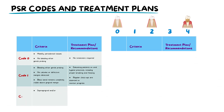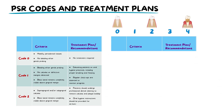Code 2 reveals calculus or factors hindering proper examination, but the black band is still visible, meaning that pockets are less than 3.5mm. Patients should undergo professional dental cleaning or debridement to remove calculus and plaque buildup. Alongside this, oral hygiene instructions should be provided for at-home care.